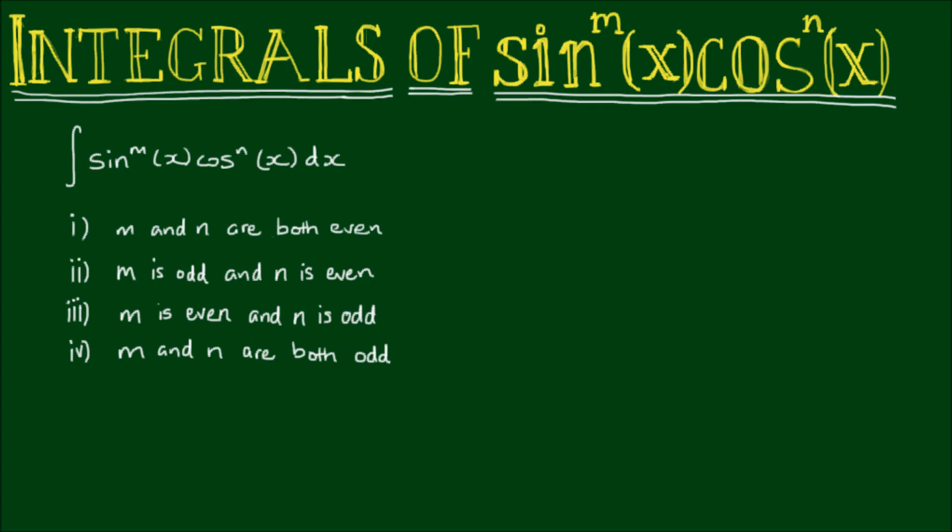Now there are four permutations to this sort of problem. The first one is when both m and n are even integers, and in these cases m and n are all integers. The second case is when m is odd and n is even. The third case is when m is even and n is odd. And finally, when both m and n are odd. We'll only look at the first case in this video, and we will look at the subsequent cases in future videos.